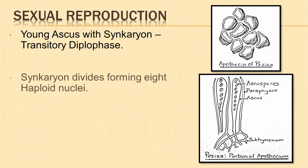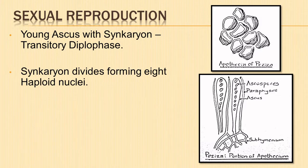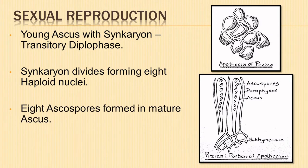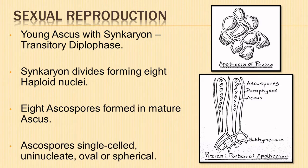The synkaryon undergoes three successive divisions. The first two constitute meiosis, resulting in the formation of eight haploid nuclei. The resultant haploid nuclei get organized into eight ascospores in the mature ascus. The single-celled uninucleate ascospores are oval or spherical in shape.